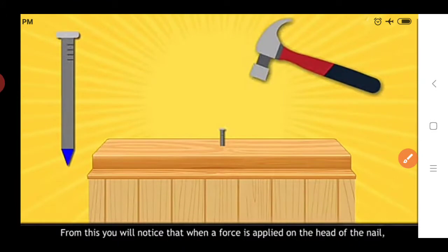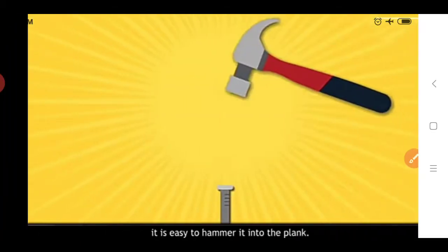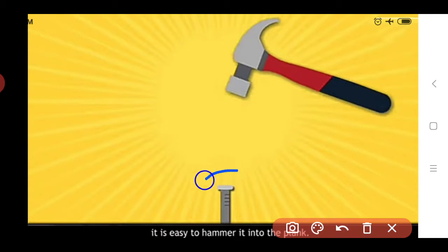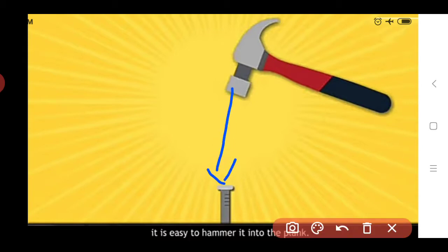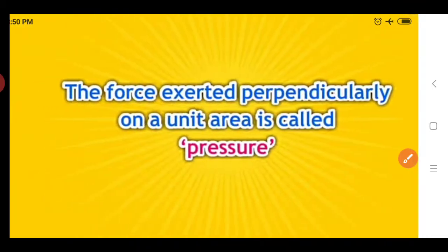When a force is applied on the head of the nail, it is easy to hammer it into the plank. The head of the nail has a large surface area. If we apply force on this surface of the head of the nail, it is easy to hammer it into the plank. Objects having large surface area allow us to easily apply force on them.